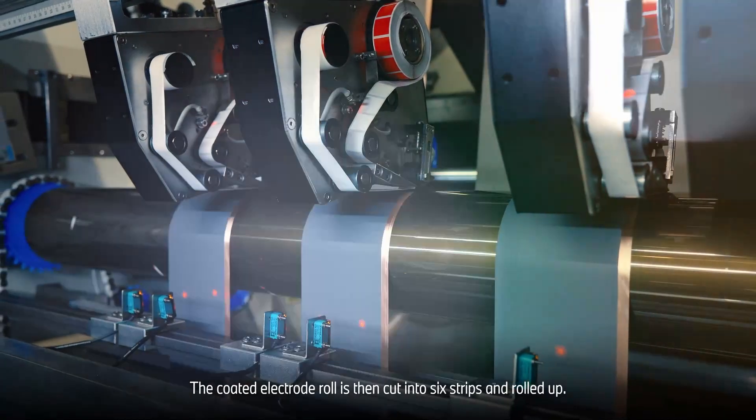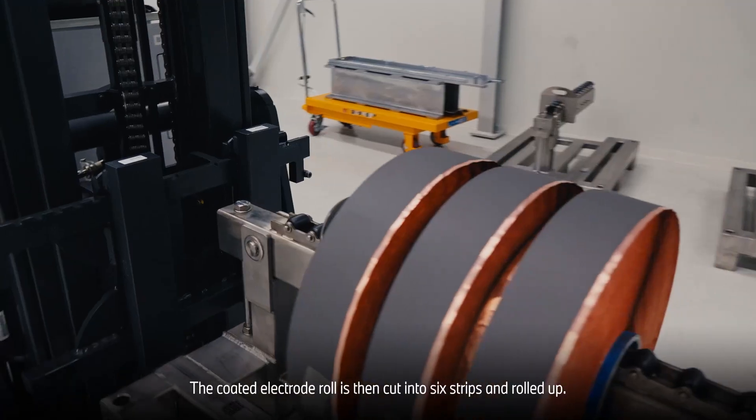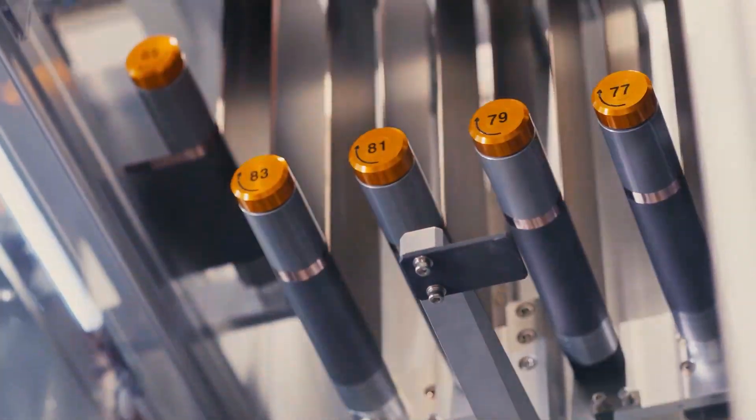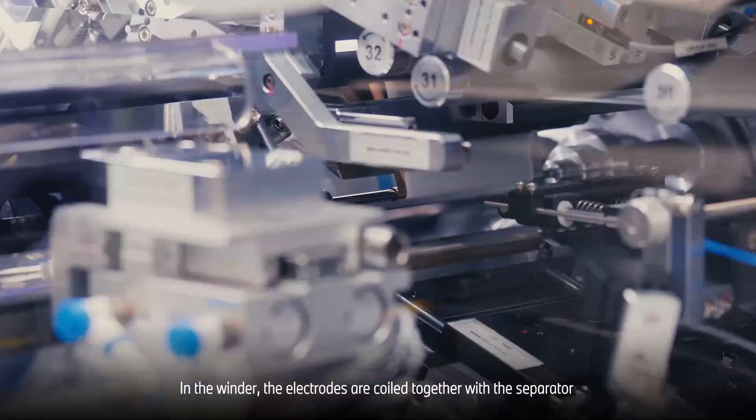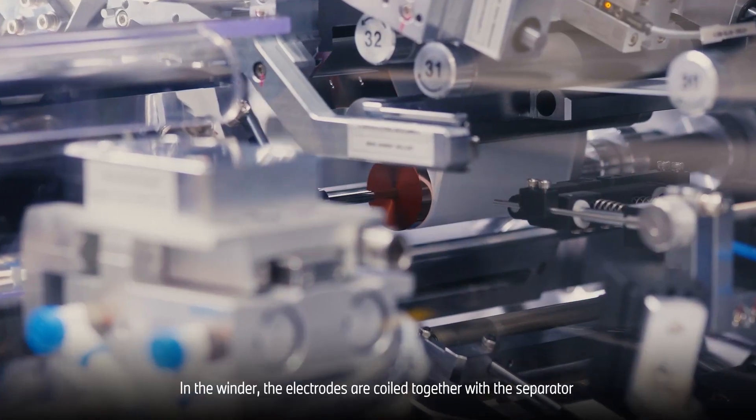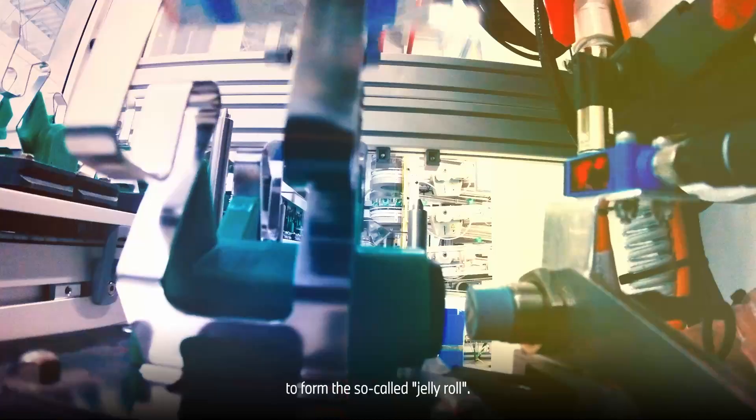The coated electrode roll is then cut into six strips and rolled up. In the winder, the electrodes are coiled together with the separator to form the so-called jelly roll.